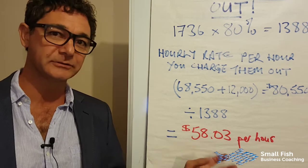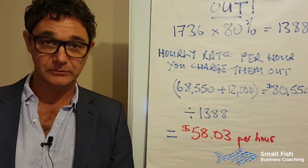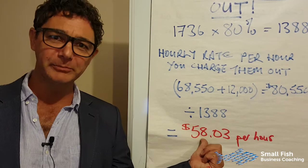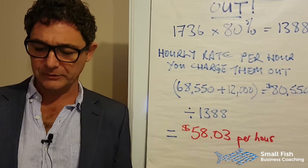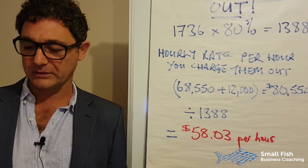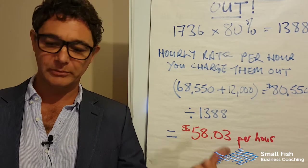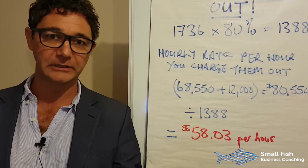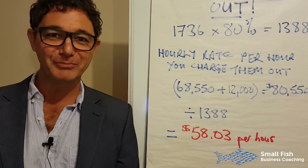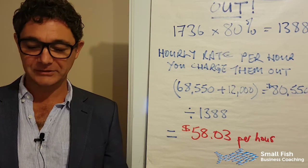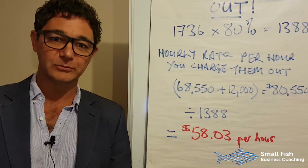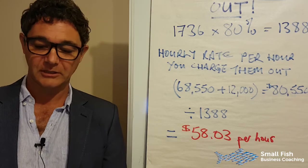$58.03 per hour is what they're costing you per chargeable hour to your clients. If you're charging $50 an hour, you're in a heap of pain. If you're charging $65, you're not doing real well either — because that $7 margin per hour needs to cover your rent, office or shed, admin staff, your own salary and vehicle, insurances, marketing, accountant, business coach, tools, IT and software — and that's before any profit. At $7 margin per hour, you need a lot of guys charging a lot of hours before you make money.